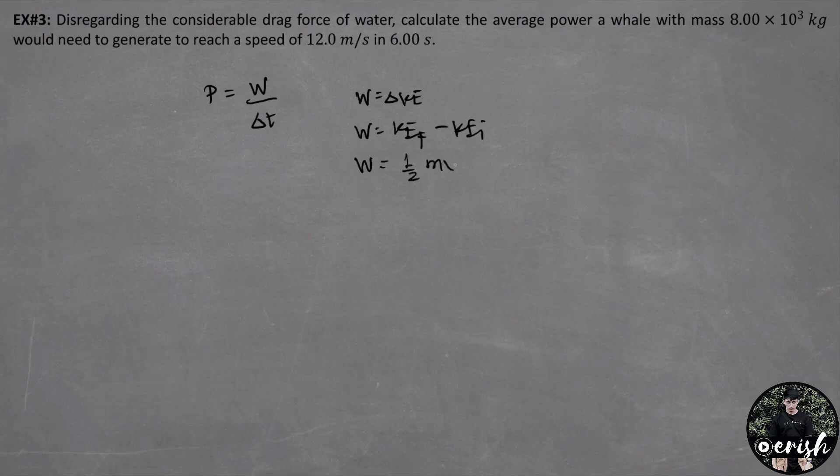1 half times mass times final velocity square minus 1 half times mass times initial velocity square. Again, it started from rest until it reached 12 meters per second. So this is 0. Work is equal to 1 half times the mass is 8 times 10 raised to 3 kilograms times the final velocity. And we have 12 meters per second.